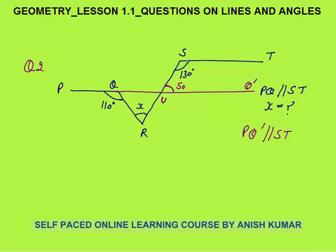Interior angles on the same side of a transversal, when two parallel lines are present, sum to 180. So this angle will be 50. This angle will also be 50 because they are vertically opposite angles. Whenever two lines intersect, opposite angles are called vertically opposite angles and they are always equal.